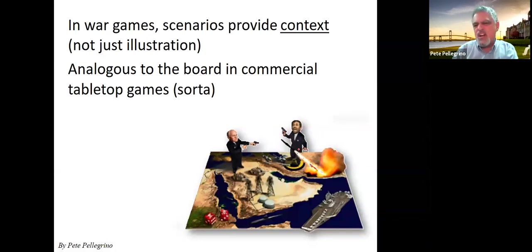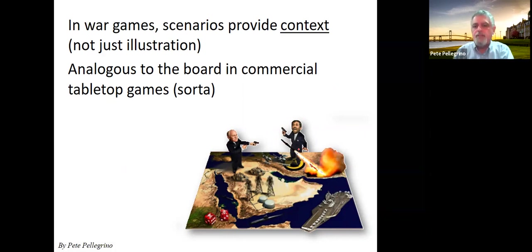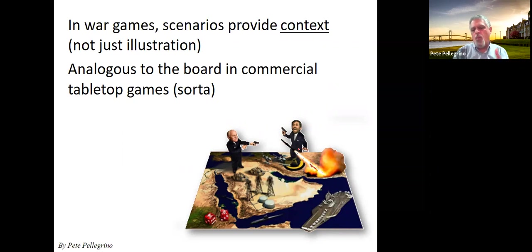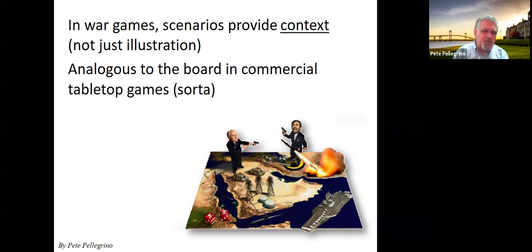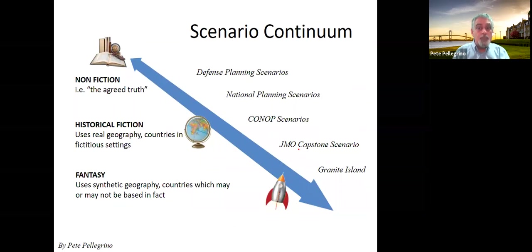Now for part two: I want to briefly touch on the scenario context. When we say 'scenario,' different things come to people's heads. It's really about the broader context of the situation you're injecting your player into. From a board game perspective, the scenario tends to be more about the map — representing the 'where' — while the pieces and pucks represent the 'what' and capabilities. The 'when' is whatever you tell them — it's 1942 or 2042. The 'why' is based on the objective you've given them to solve. It's somewhat analogous to the board but not completely.